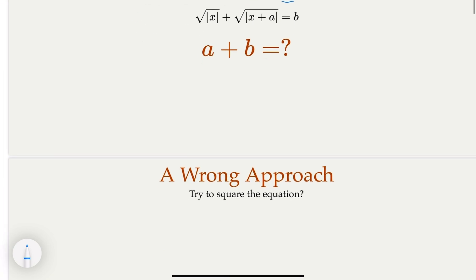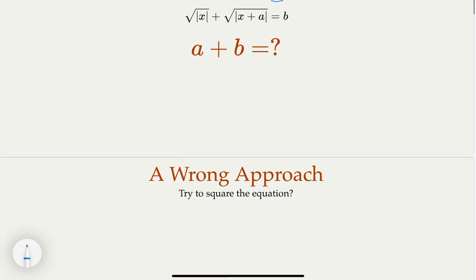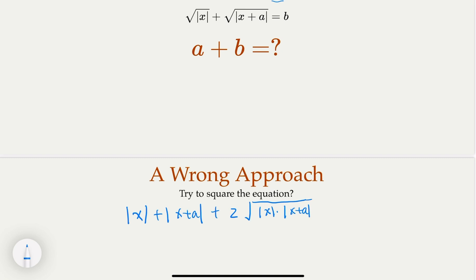So, of course, whenever you see a square root, naturally you would like to square it, right? So let's do that. Alright, so on both sides, the left-hand side would be |x| + |x + a| + 2√(|x||x + a|), right-hand side would equal b².